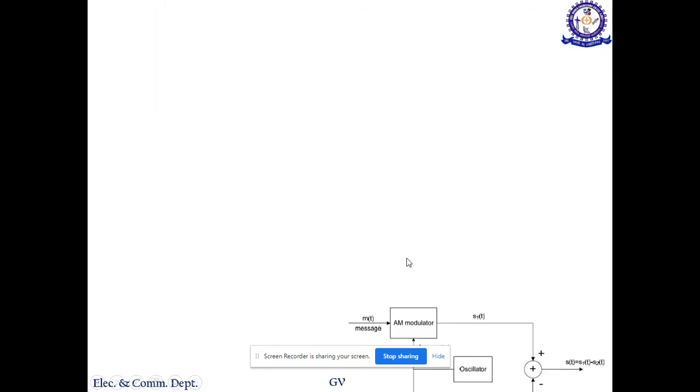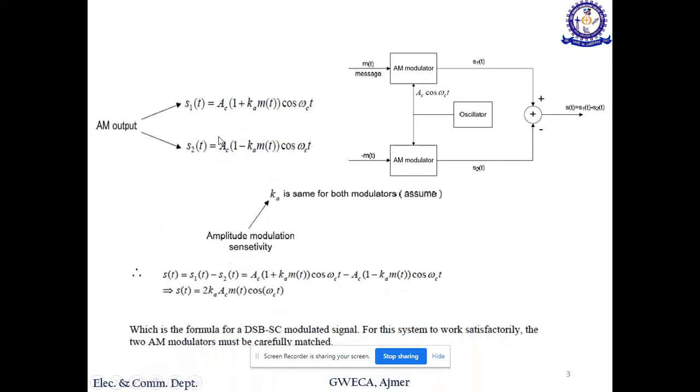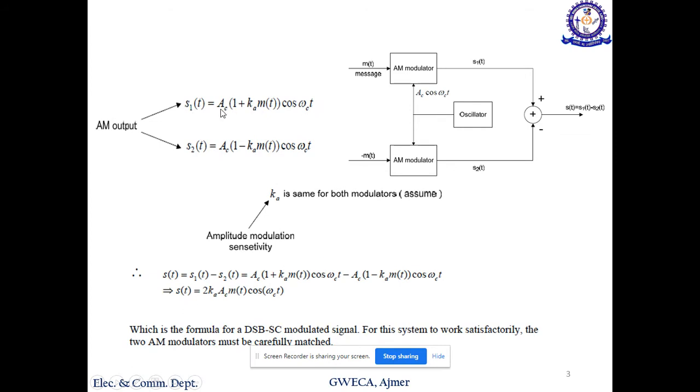So how to perform this? First of all, we know that s1(t) is given by Ac cos(ωc t), and output of the AM modulator signal is [1 + Ka m(t)]. So Ac multiplied by [1 + Ka m(t)] into cos(ωc t) is the same for both modulators. We have to assume that Ka is the same for both amplitude modulation sensitivity.